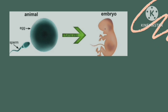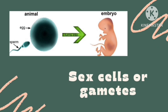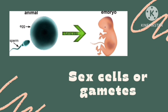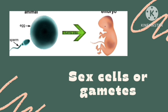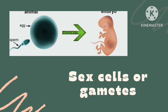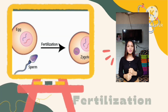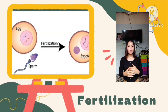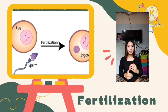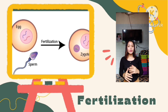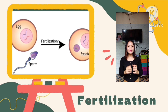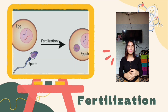Animals have sex organs that produce sex cells or gametes. These gametes contain information about the new organism. There are two types of sex cells or gametes: the egg cell for females and the sperm cell for males. Fertilization takes place when a sperm cell unites with the egg cell. The fertilized egg is called a zygote, which develops into an embryo. The embryo undergoes continuous development until it eventually grows into a newborn animal.